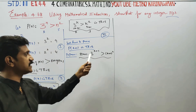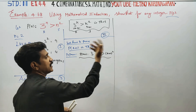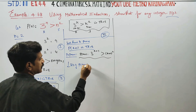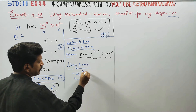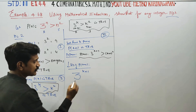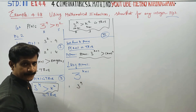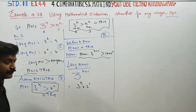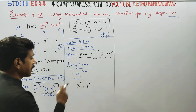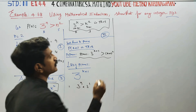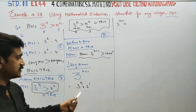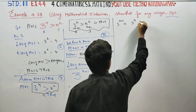To prove this, we start with LHS, which is 3 power k plus 1. This can be written as 3 power k into 3 power 1, that is, LHS is equal to 3 power k multiplied by 3.